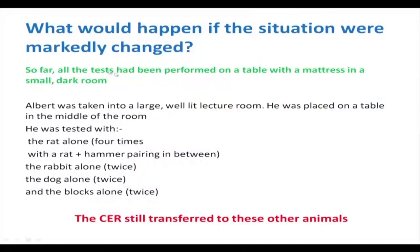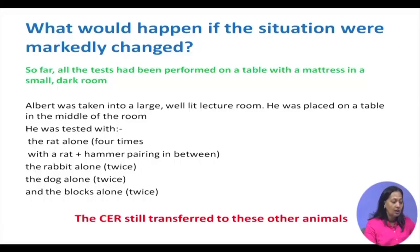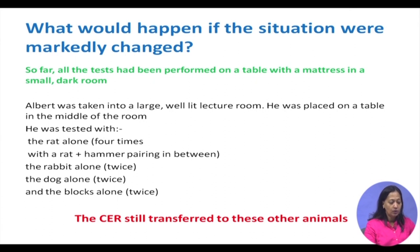All tests had been conducted in a small dark room on a table with a mattress. Watson and Reiner wished to check: what would happen if the situation was markedly changed? Would the conditioned emotional response still be present in another place? Albert was taken into a large, well-lit lecture room and placed on a table in the middle of the room. He was tested with the rat alone four times, with the rat and hammer, the rabbit alone twice, the dog alone, and the blocks alone. The conditioned emotional response still transferred — when the animals were present in the different room, the fear remained.